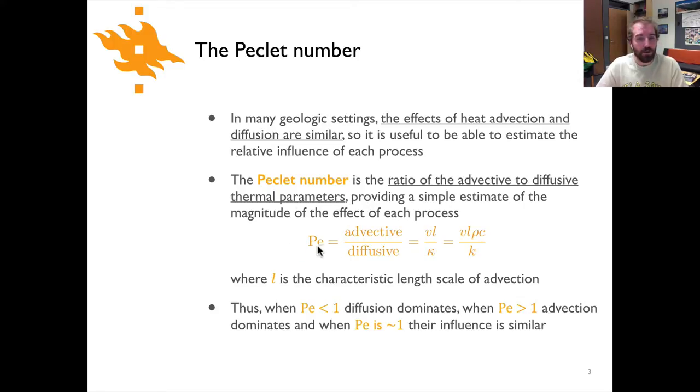The definition is shown here: the Peclet number is the ratio of advective to diffusive heat transfer processes where advective heat transfer processes are represented by v, some velocity, times l, which is a characteristic length scale of advection. I'll give you a little bit more information about that in just a second. Divided by kappa, which is the thermal diffusivity.